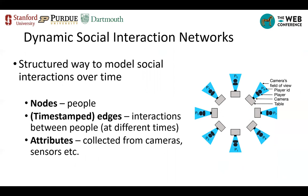To abstract and model social interactions over time, we use dynamic networks. Dynamic social interaction networks contain three elements: nodes, where each node represents one person in the interaction event; timestamped edges, where each edge represents one particular piece of interaction between people occurring at a certain time; and node behavior features as dynamic attributes, usually collected from cameras or sensors.